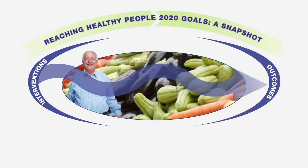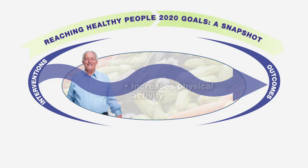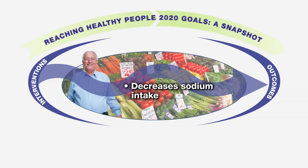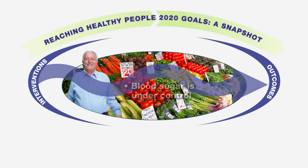Now James walks to the farmer's market each week, increasing his physical activity level. He's eating more fruits and vegetables now that he can afford them. James is also eating less canned food, which is higher in sodium. James' new diet and increased physical activity are helping to keep his blood sugar under control.